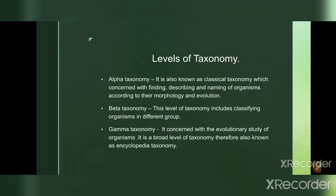Beta taxonomy involves classifying organisms into different groups. Gamma taxonomy concerns the evolutionary study of organisms and is a broad level of taxonomy, also known as encyclopedic taxonomy. It is concerned with biological aspects of taxa, including intraspecific population, speciation, evolutionary rate, and trends.